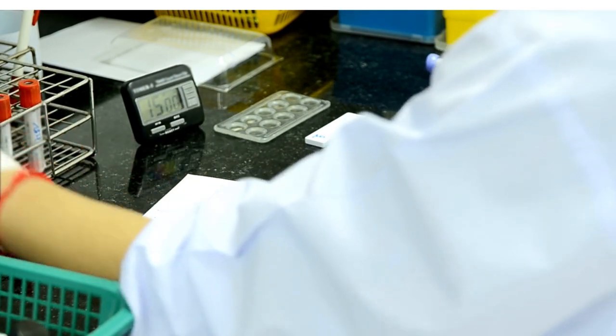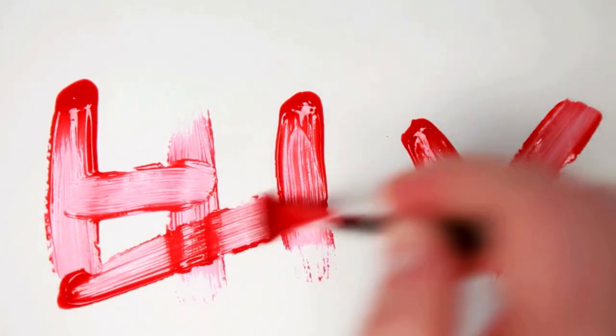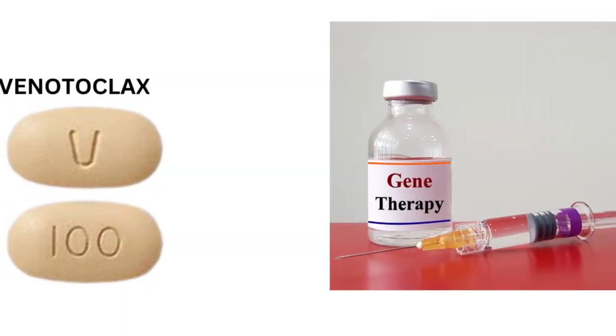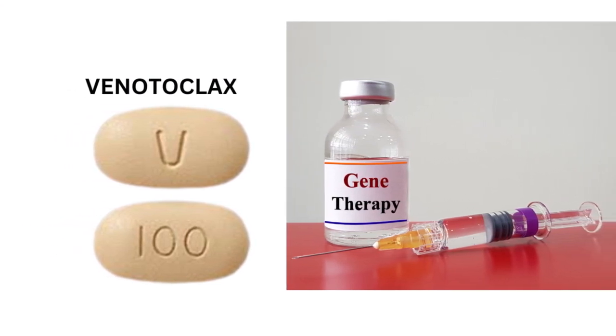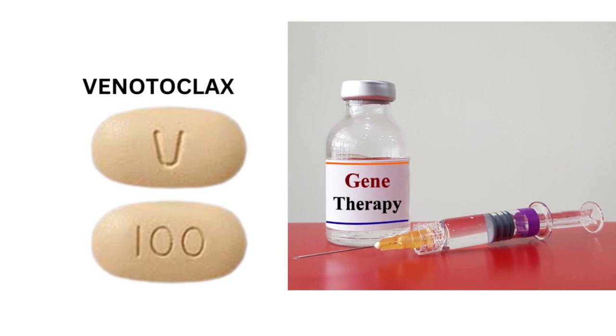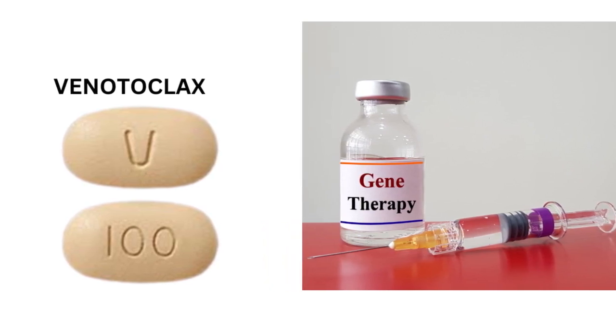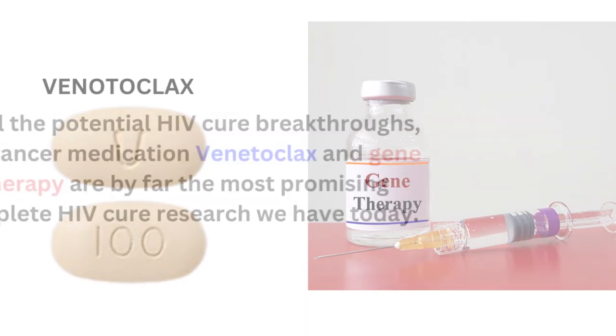Venetoclax is different from gene therapy I have been telling you about from the American Gene Technologies. Whereas gene therapy aims at genetically engineering your CD4 cells to resist HIV entrance and infection, venetoclax kills your body cells that harbor the hidden virus. Of all the potential HIV cure breakthroughs, the cancer medication venetoclax and gene therapy are by far the most promising complete HIV cure research we have today. In my opinion, these are the only research I trust as a medical worker with experience in HIV clinical treatments.